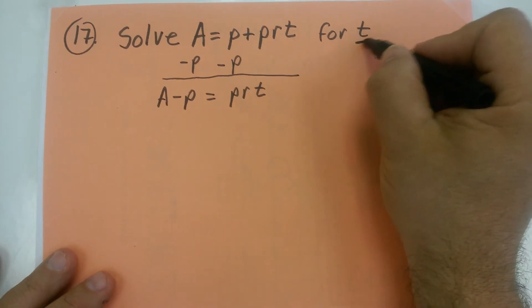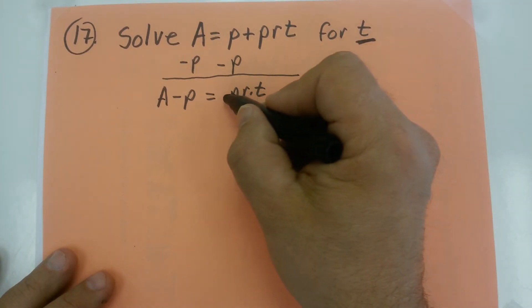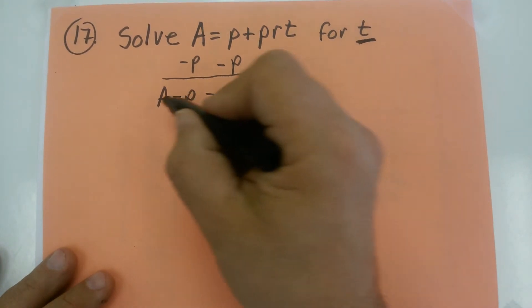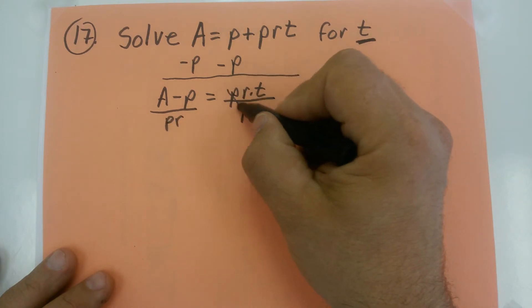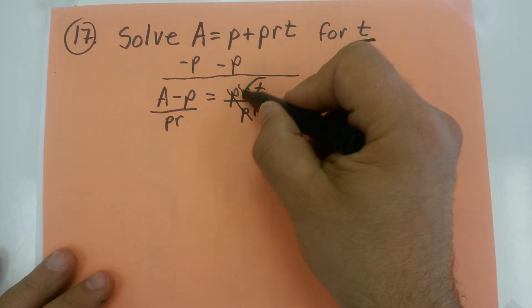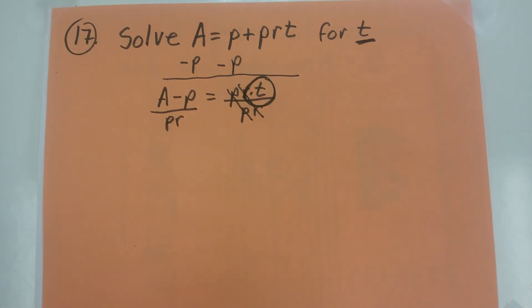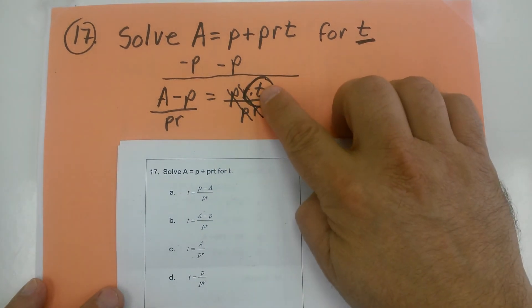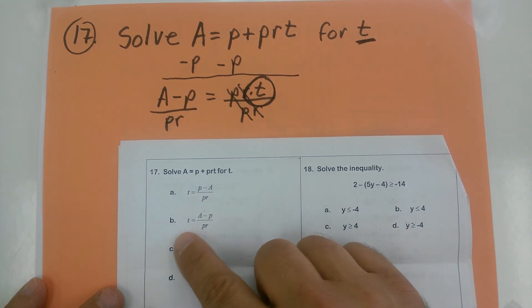I'm solving for t, so the opposite of multiplying by pr is dividing by pr. I divide both sides by pr, which cancels out, leaving just t. That gives me t equals a minus p over pr.